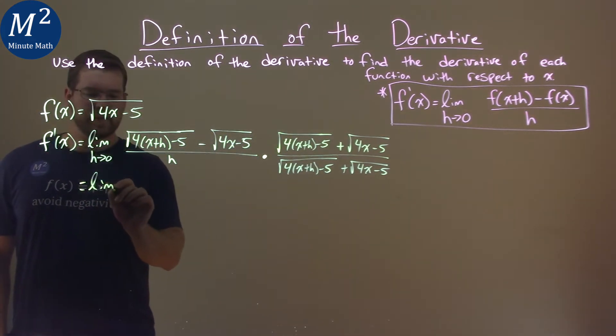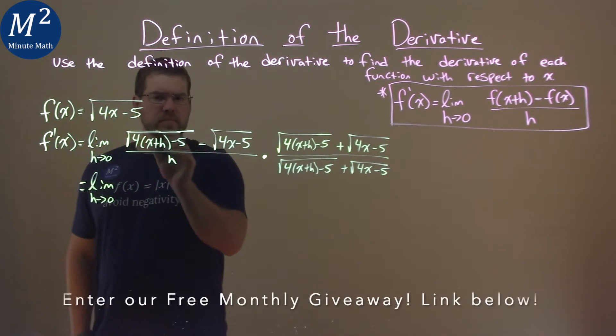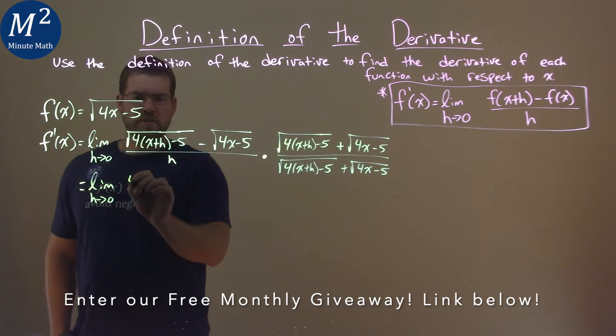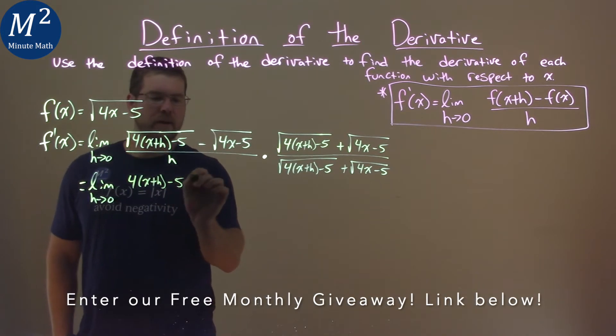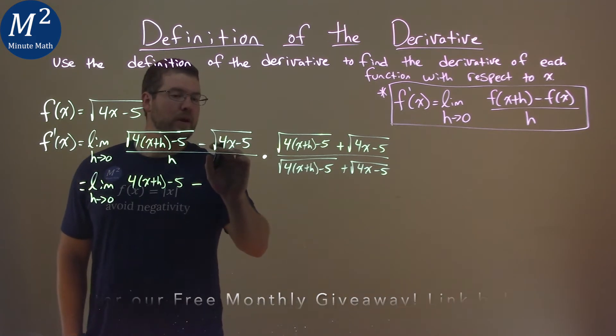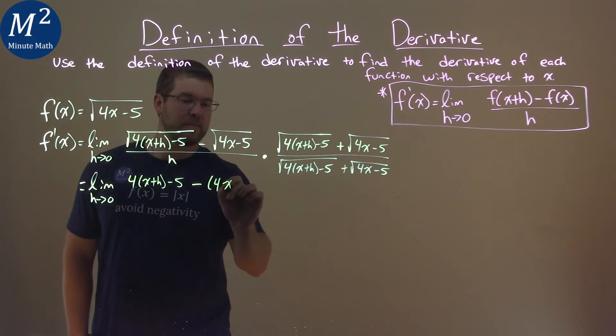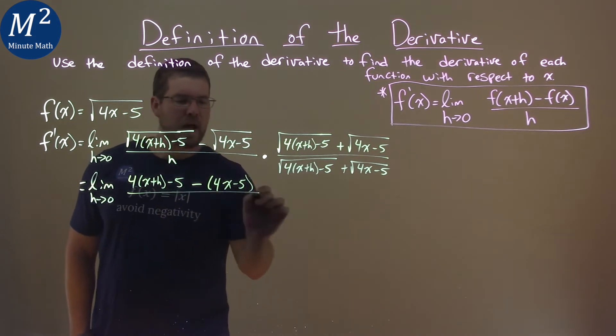So, we have the limit as h approaches 0. Multiply it out, the square root gets eliminated, and we're left with just 4x plus h minus 5, and then minus the square root of 4x minus 5 and the square root of 4x minus 5, which just is 4x minus 5.